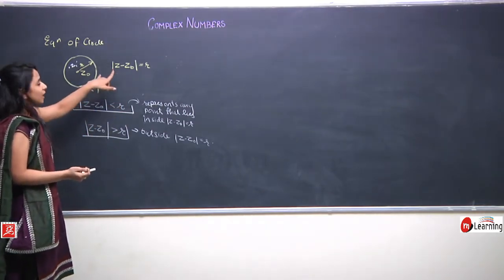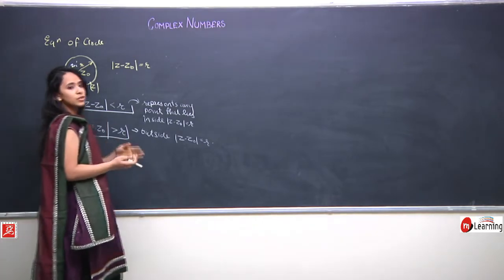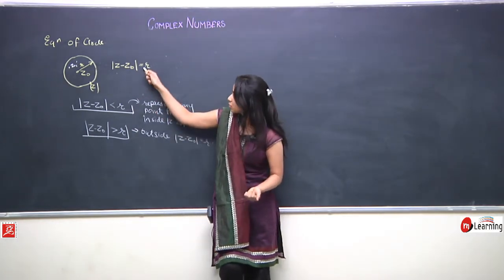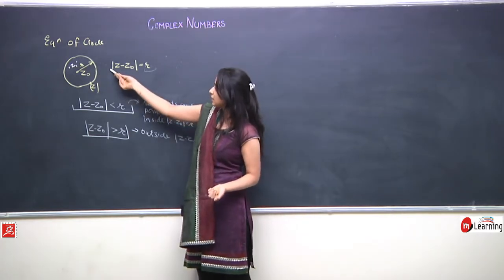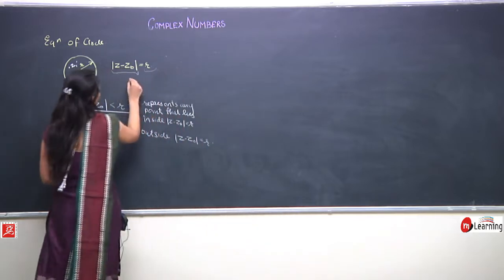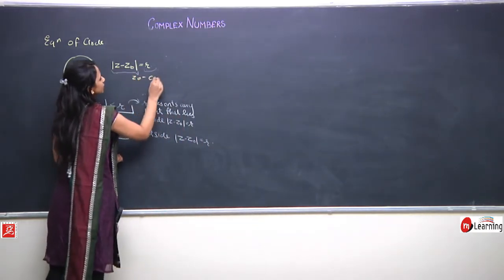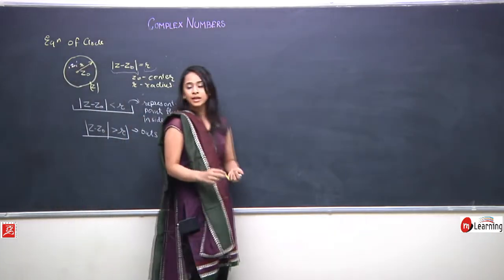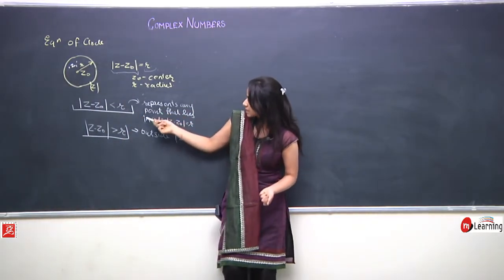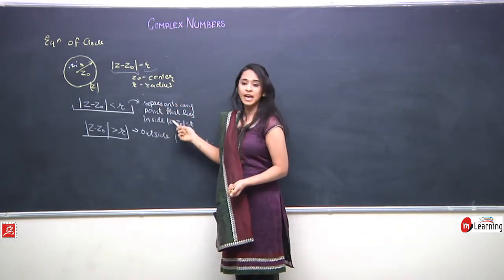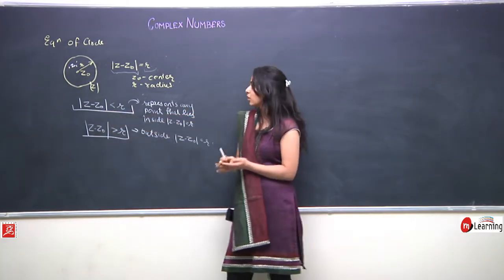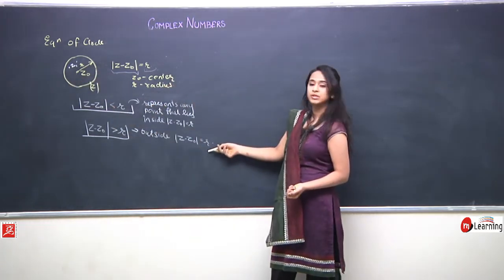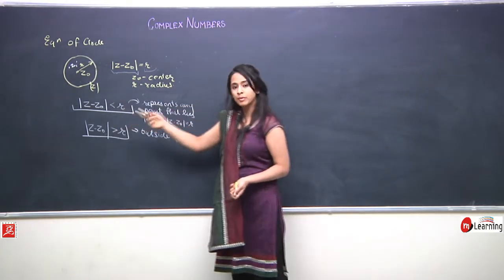To review: a circle is the locus of a point whose distance from a fixed center is always constant and equal to the radius. So any point z on the circle satisfies |z - z0| = r. A point inside satisfies |z - z0| < r, and a point outside satisfies |z - z0| > r.